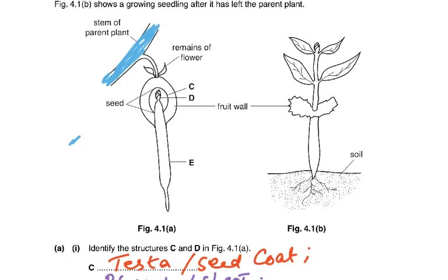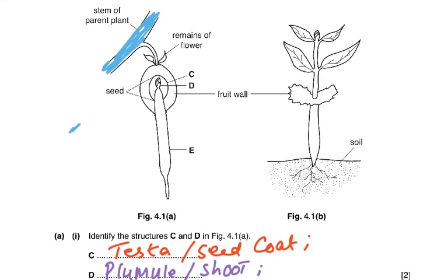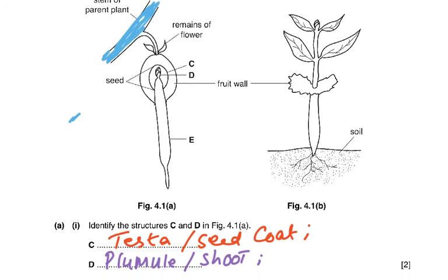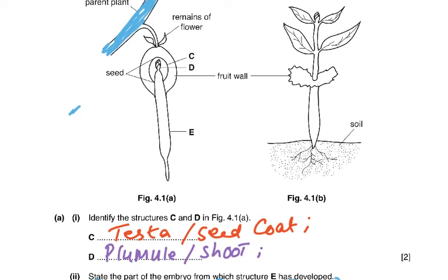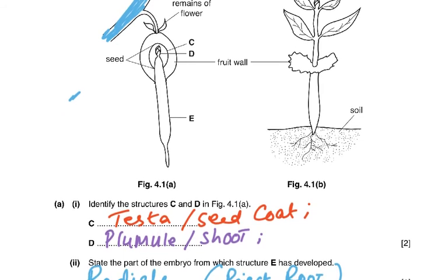It says identify structures C and D. C was the testa, or seed coat — very difficult because you needed to identify the seed. D was the plumule, or the shoot. So C had to be the seed coat or testa, and D was the plumule or the shoot.